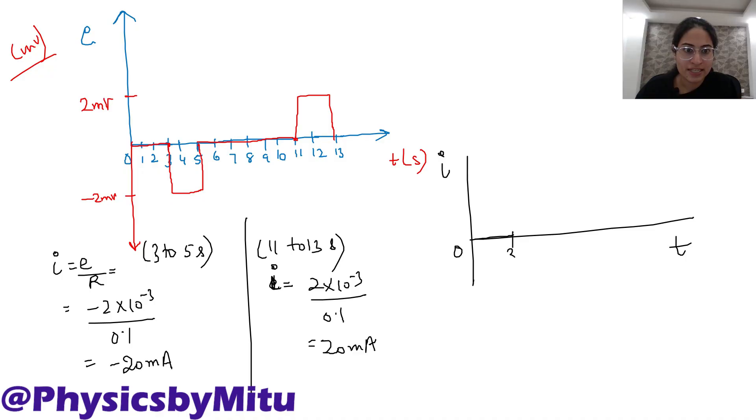Plotting the graph for current, I versus t. 0 to 3, 0. Then 3 to 5 seconds, minus 20 milliampere. 5 to 11, 0. And 11 to 13 plus 20 milliampere.